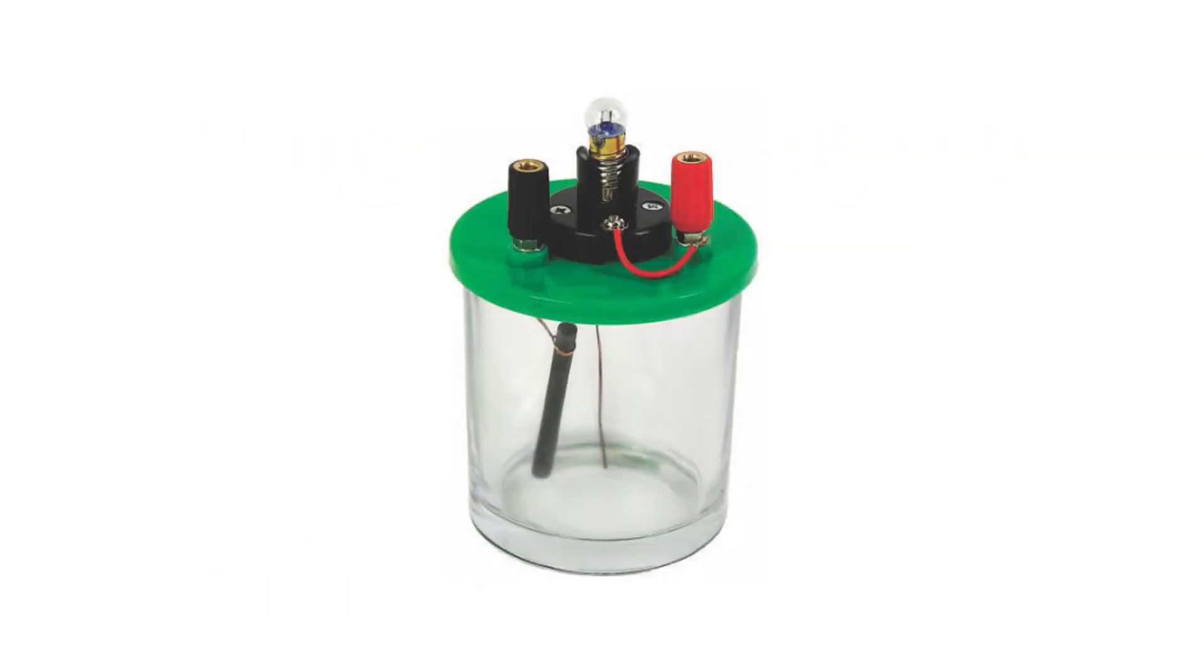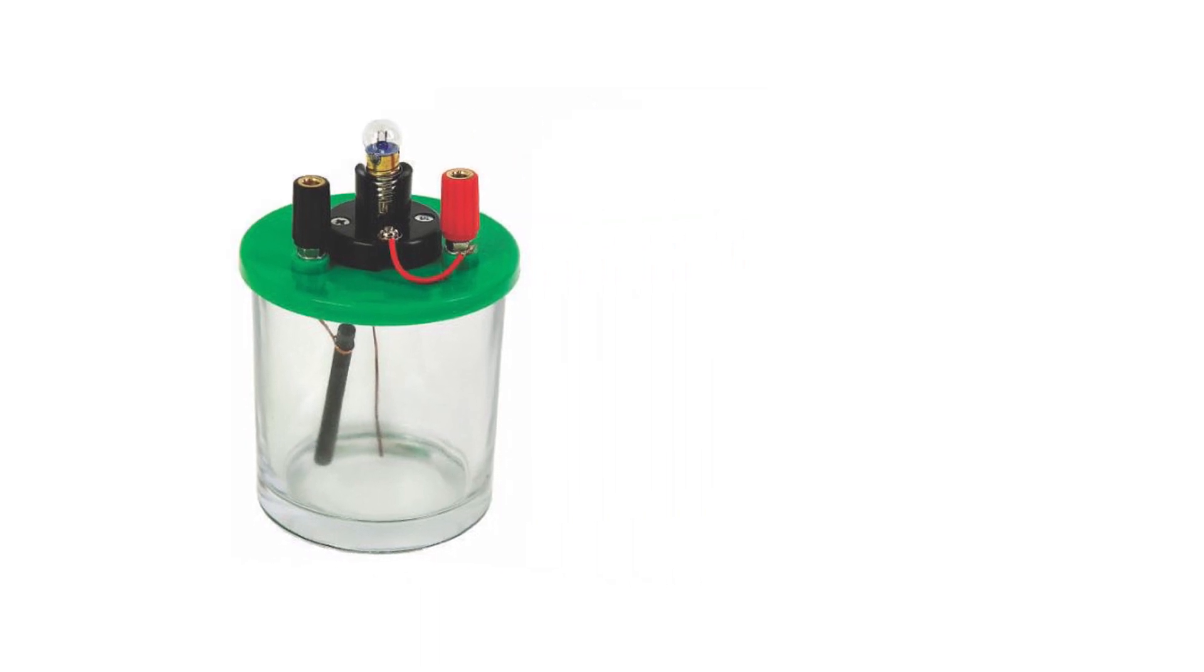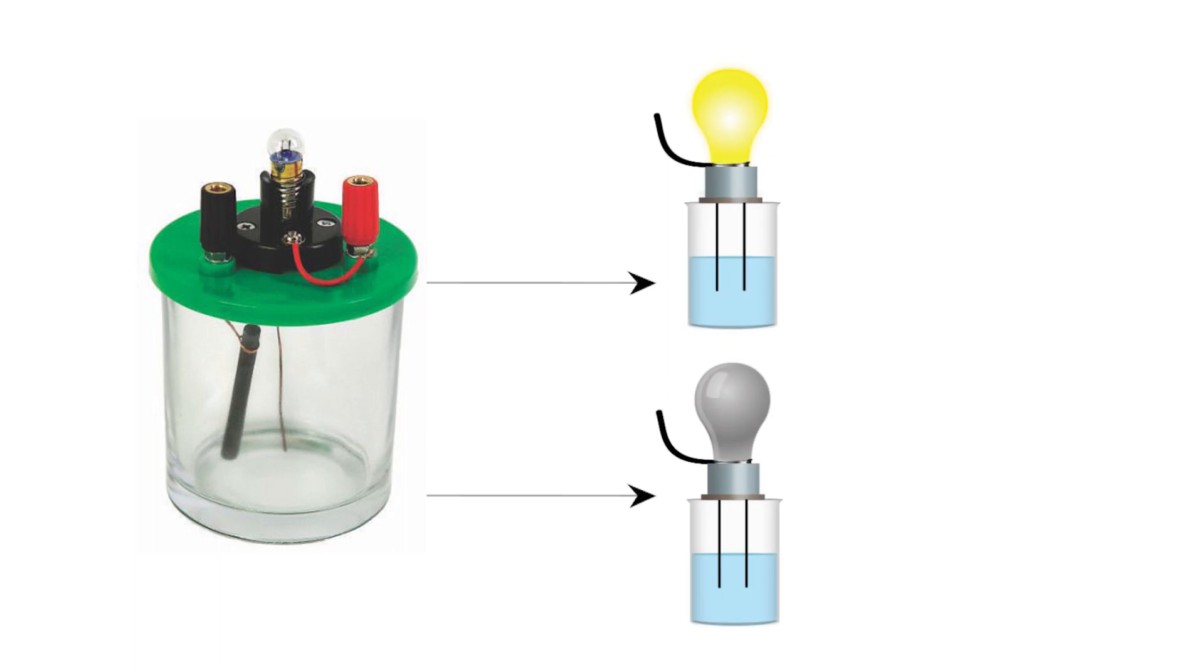You can do the test using a conductivity apparatus. Try to dip the metal strips into the solution. If the light bulb glows, it means the compound is a conductor of electric current or an electrolyte.